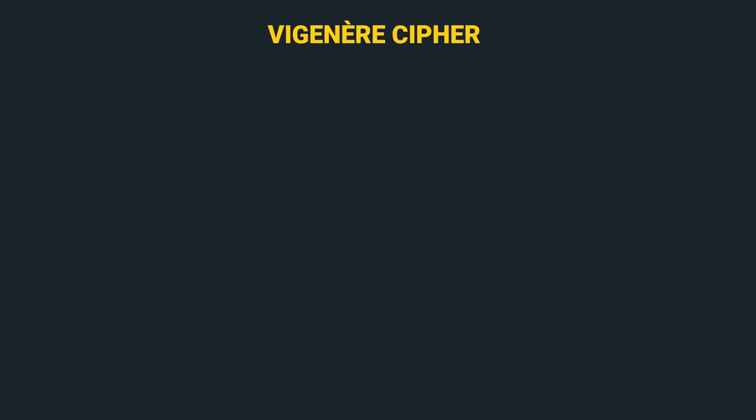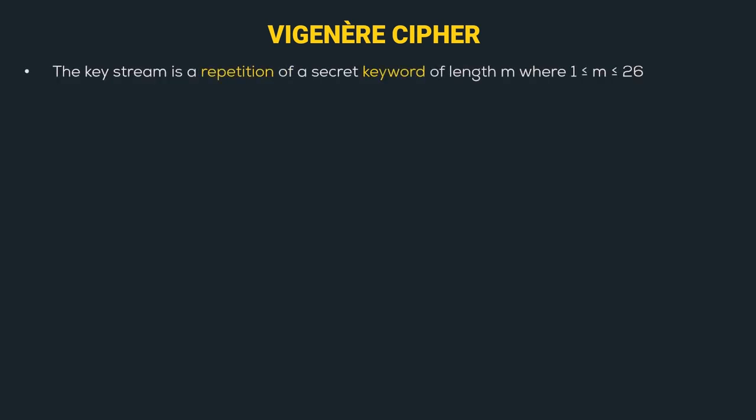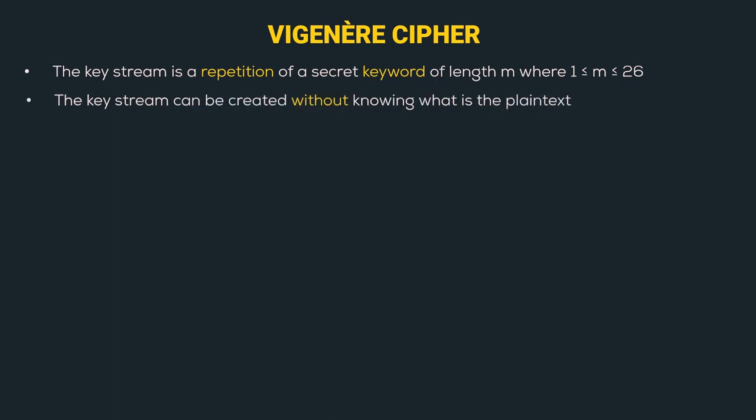How is it different? Here, the key stream is a repetition of a secret keyword of length m, where m lies between 1 and 26, both inclusive. Also, the key stream can be created without knowing what the plain text is. In autokey cipher, we require the plain text to generate the key stream, but in Vigenère Cipher, there is no requirement of the plain text.